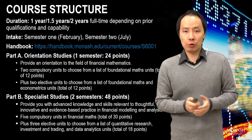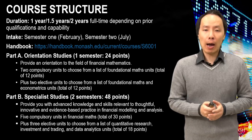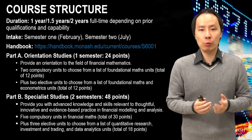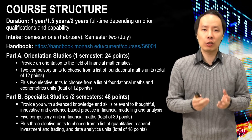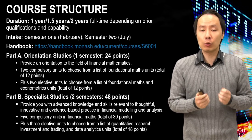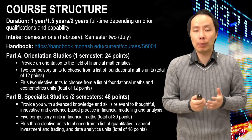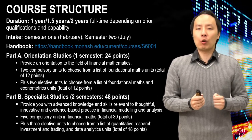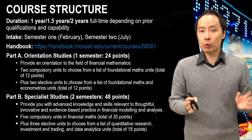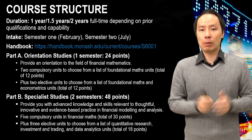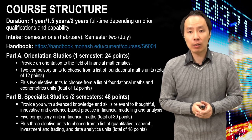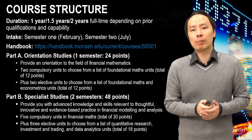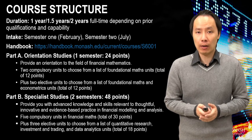Here's the course structure. Part A is a one-semester, six-month component where you'll take four units at essentially third-year level to help brush up on your mathematics in preparation for part B. Part B is the meat of the program — a year-long, two-semester, eight-unit component containing many specialized units in financial mathematics, including stochastic calculus, quant risk management and computational methods in finance.